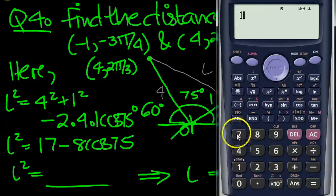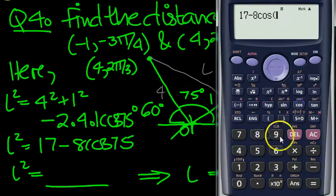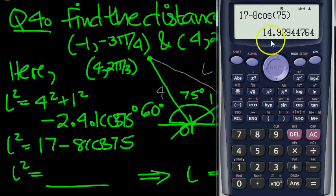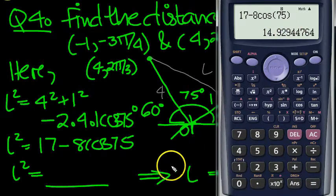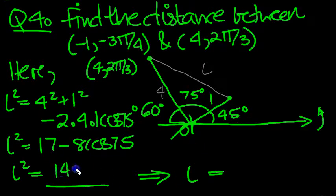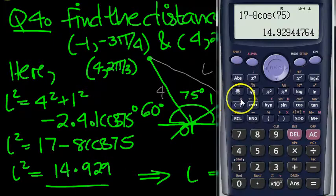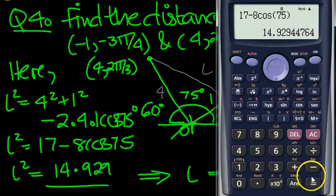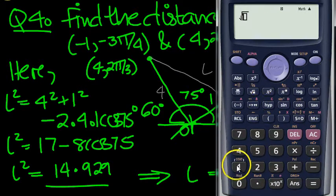17 minus, I'm in degrees mode, 8 times cosine of 75 degrees equals 14.929. So that's 14.929, and then we can square root 14.929.